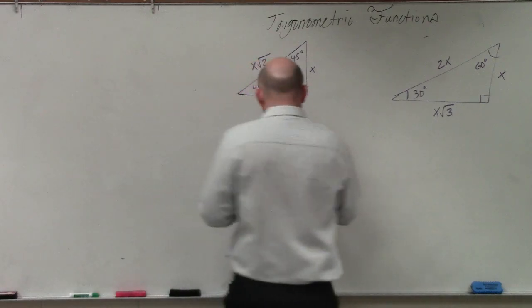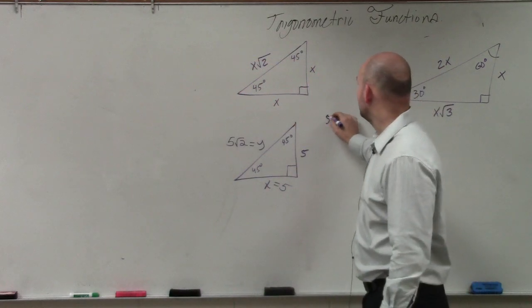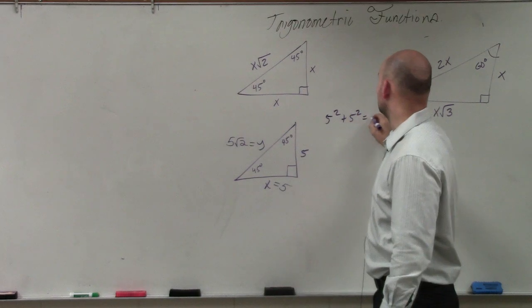And if you want to do 5 squared plus 5 squared, you would have what? 5 squared plus 5 squared equals c squared, right?